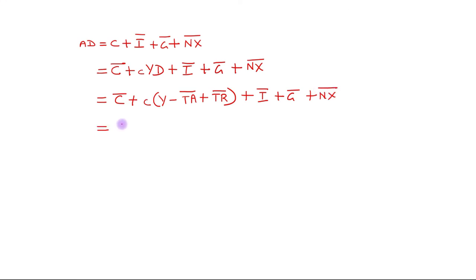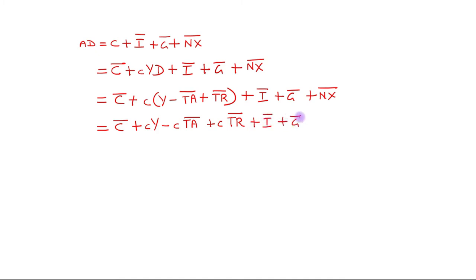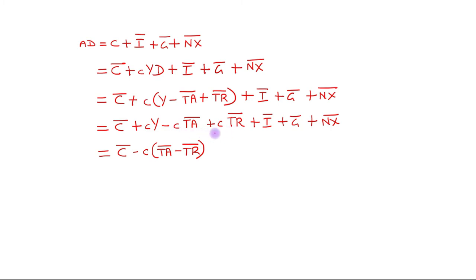The next step is to multiply MPC through the bracket terms, giving: C̄ plus MPC·Y minus MPC·T̄A plus MPC·T̄R, plus Ī, Ḡ, and N̄X. Then I take MPC as common from the taxes and transfers terms, yielding: autonomous consumption minus MPC·(T̄A minus T̄R), plus Ī, Ḡ, N̄X, plus MPC·Y.